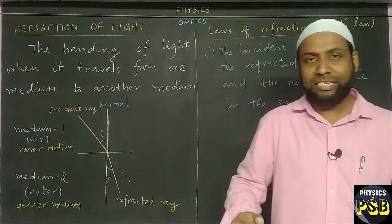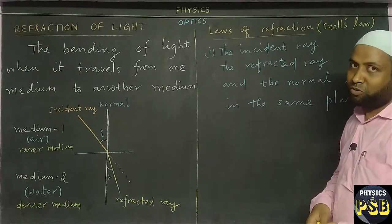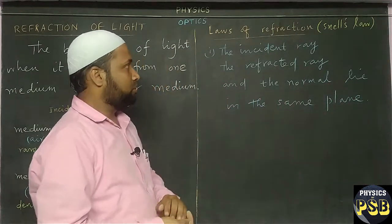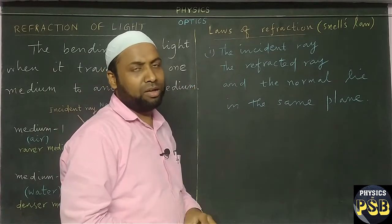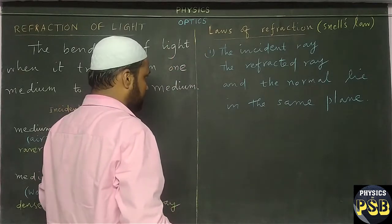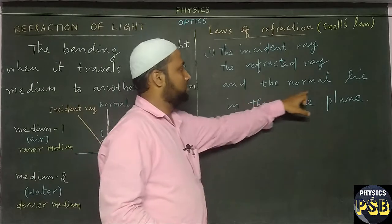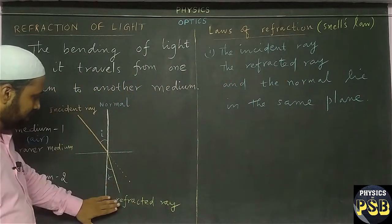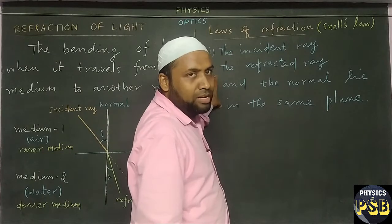Let me tell you what the laws of refraction say. The laws of refraction are otherwise known as Snell's law, as it was given by Snell. The first point of Snell's law is similar to the laws of reflection. It says that the incident ray, the refracted ray, and the normal all lie in the same plane. Look here — all these three things lie in the same plane. This is what the first law says.